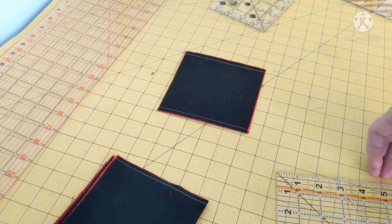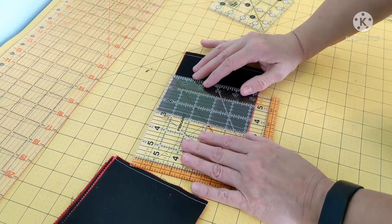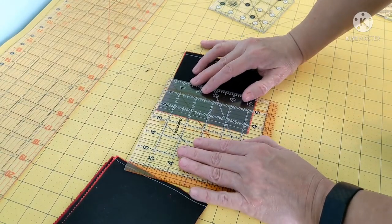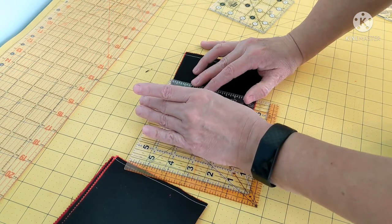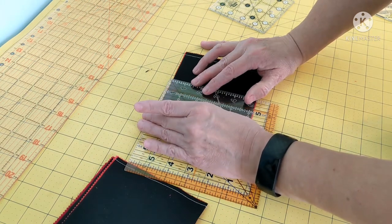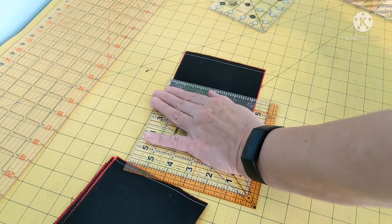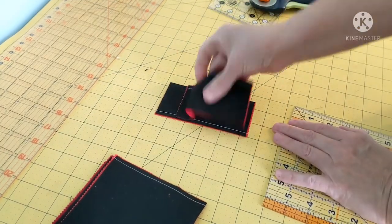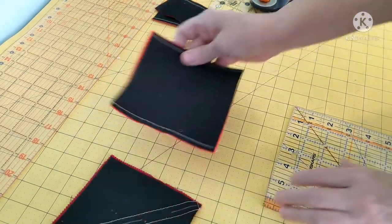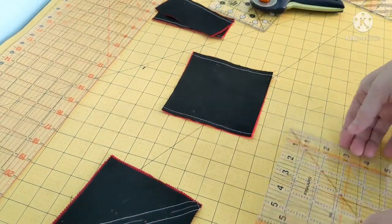Okay, we're ready to trim these up so we need to make this two and a half inches. Cut that down the middle. Do the same thing on this one.